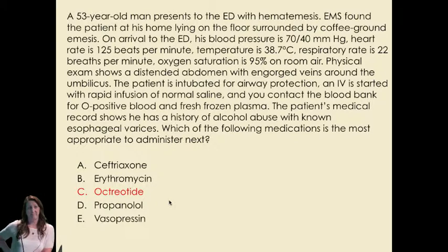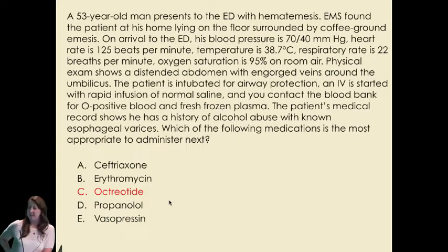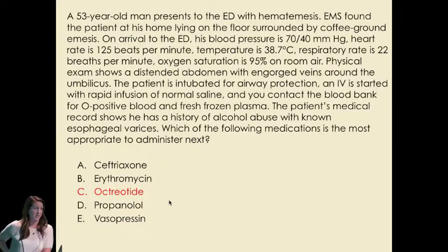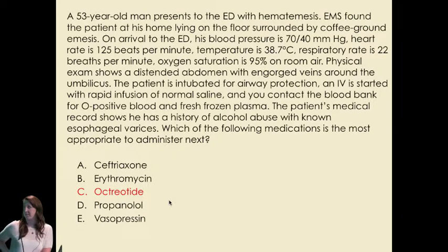Do you know what octreotide is? It's an analog of somatostatin. It inhibits the exocrine function of glandular tissues, resulting in less acid and pepsin secretion. In the setting of an upper GI bleed, it reduces gastroduodenal mucosal blood flow, facilitating hemostasis.